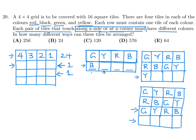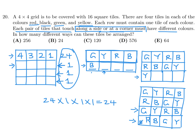For the fourth row, the first tile can't be G or Y. Trying B leads to a contradiction immediately, so it must be R. Then B, G, Y follow with only one choice each. Every row after the first has exactly one valid arrangement. The total is 24 × 1 × 1 × 1 = 24. Number 20 is B.